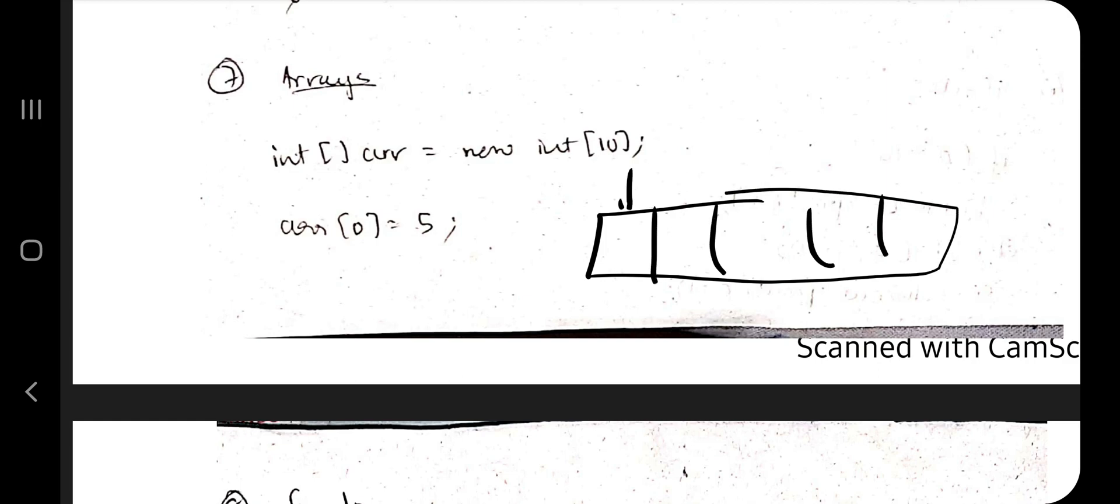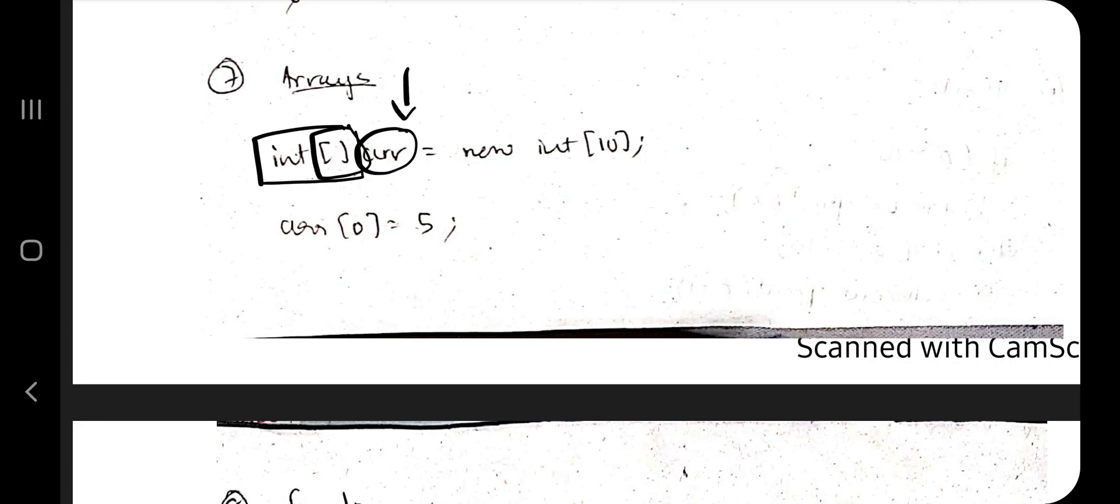Coming to arrays, arrays is nothing but just a group of same kind of elements. This is the syntax: here first you will write int, after that make square brackets here and write the array name. After that, new int and the size of the array within the square brackets. If you want to access any element, access using array of what index value you want to access. If you want to assign any value, you'll be using this one - like at this index what value you want to assign.